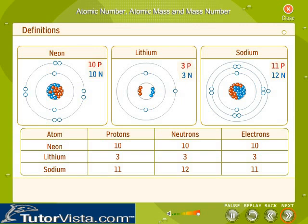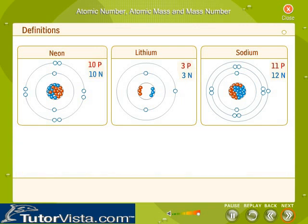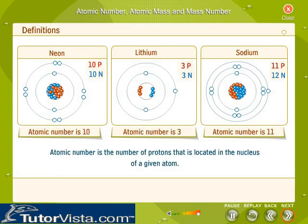Within any atom of a particular element, the number of protons is always fixed. The number of protons is responsible for determining the type of element the atom is. With this background, we can define the atomic number as the number of protons that is located in the nucleus of a given atom.